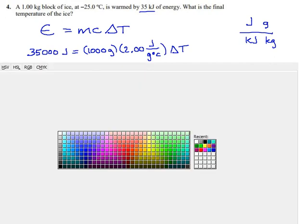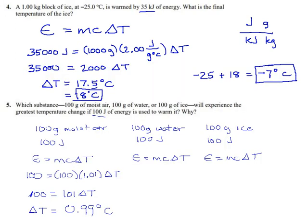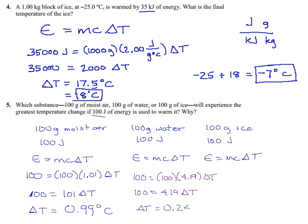Now we do that again for water. The energy is 100 joules, the mass is 100 grams, and the specific heat for water is 4.19. So 100 equals 100 times 4.19, which is 419 delta T. Our temperature change is 100 divided by 419 — about a quarter of a degree — 0.24 degrees Celsius.